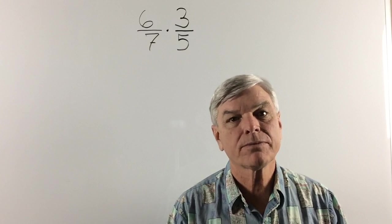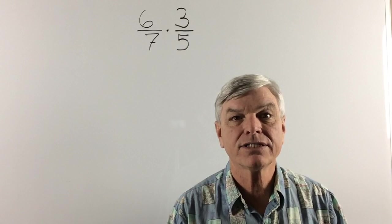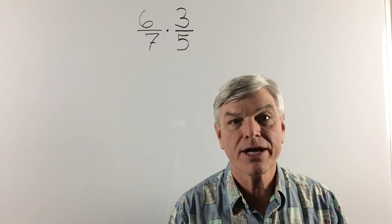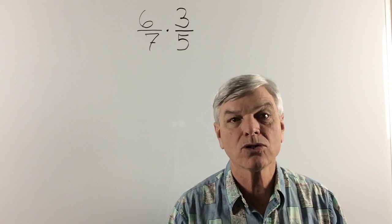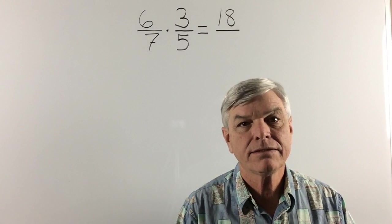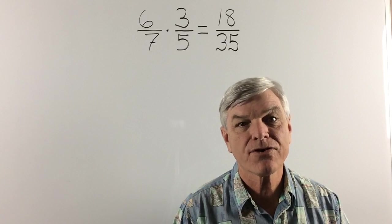Now let's do a simple multiplication problem. We have 6 sevenths times 3 fifths. In fractions, we multiply the numerator times the numerator and the denominator times the denominator. That is, we multiply across. 6 times 3 is 18. And 7 times 5 is 35. Our answer is 18 over 35.